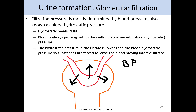Think of it like a garden hose: as water flows through it, the water is pushing on the walls of the hose. We know that's true because if you poked a hole in a garden hose, water would squirt out. So blood hydrostatic pressure is the pressure of the blood pressing on the walls of the blood vessel. The hydrostatic pressure of the filtrate is much lower than the blood hydrostatic pressure, so substances are forced to leave the blood moving into the filtrate rather than the other way around.